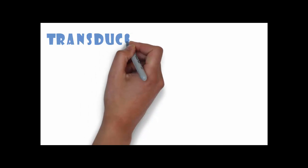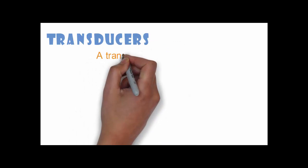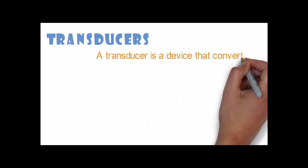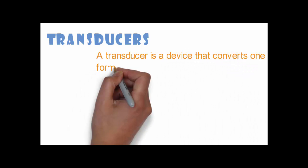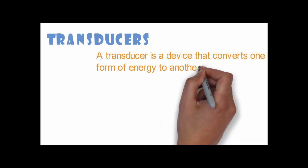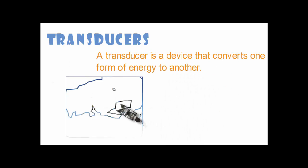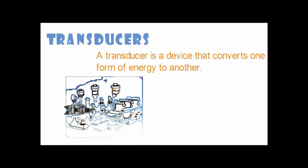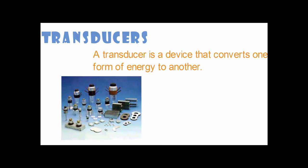Hello guys and welcome back to your channel Explore Electronics. Today we are going to discuss another interesting topic: transducers. Transducers are one of the most important parts of electronics — it is a device that converts one form of energy to another. Here are some images of different types of transducers. Further in the video we will discuss how they are very useful to us.